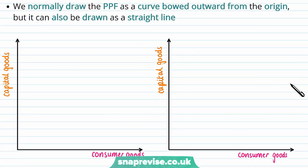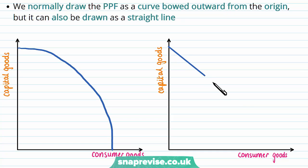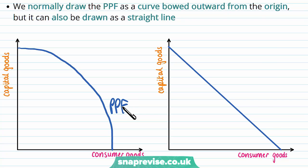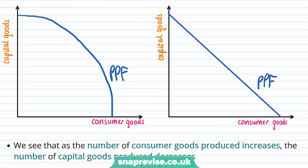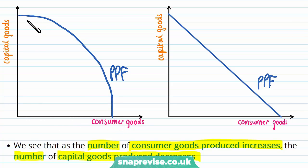There are two ways we draw PPF curves. The most common is a bowed-out shape from the origin — a curve coming outwards and sloping down. We also have a straight line also going down. What we can see from the shape of these curves is that as the number of consumer goods produced increases, the number of capital goods produced decreases. On the straight line there is a constant decrease of capital goods, whereas on the PPF curve we see different levels of decreasing rates of capital goods.